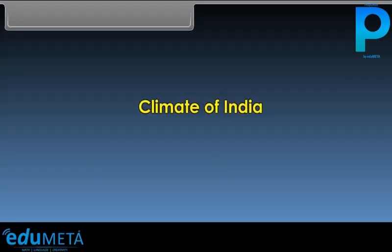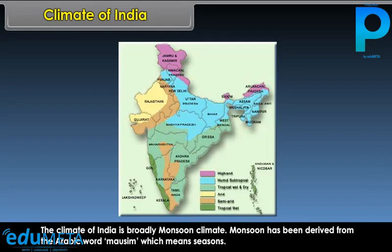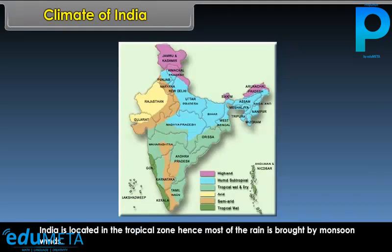The climate of India is broadly monsoon climate. Monsoon has been derived from the Arabic word 'mossim', which means seasons. India is located in the tropical zone; hence, most of the rain is brought by monsoon winds.